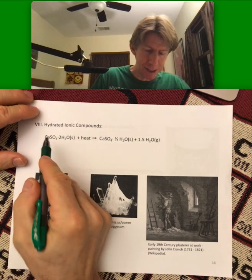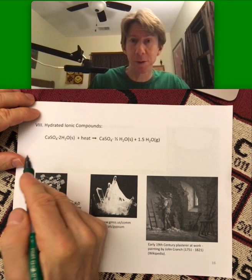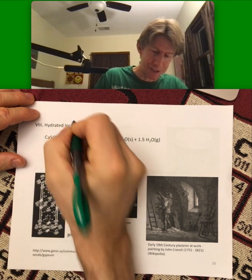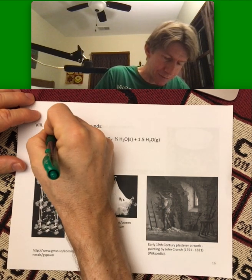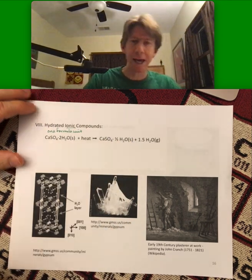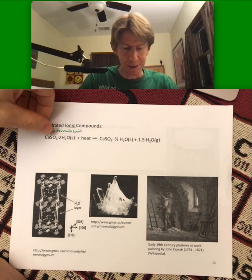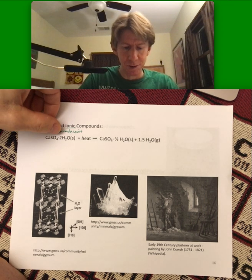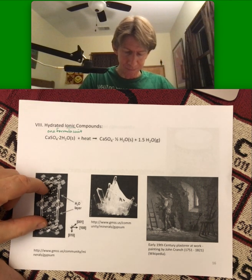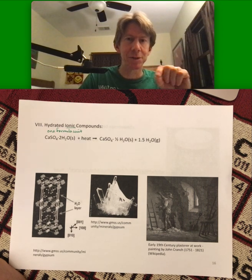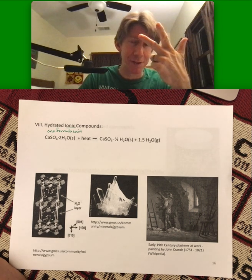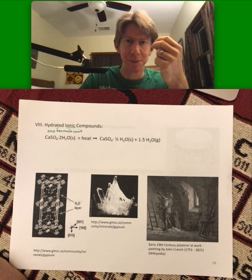This is one formula unit — because these are ionic compounds, we use formula units. One formula unit includes calcium sulfate and two H2O molecules. If you look inside this structure, you will see that the simplest picture includes calcium sulfate and two water molecules, so really three separate things, but that's the simplest picture.